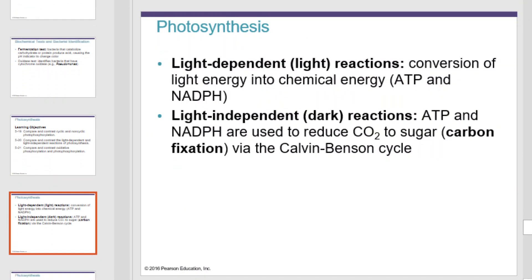Photosynthesis occurs in two stages: the light-dependent reactions, sometimes referred to as the light reactions, and the light-independent reactions, sometimes referred to as the dark reactions. The light reactions convert light energy into chemical energy in the form of ATP and NADPH. The dark reactions take ATP and NADPH produced in the light reactions and use them to reduce carbon dioxide to sugar through carbon fixation in the Calvin-Benson cycle.